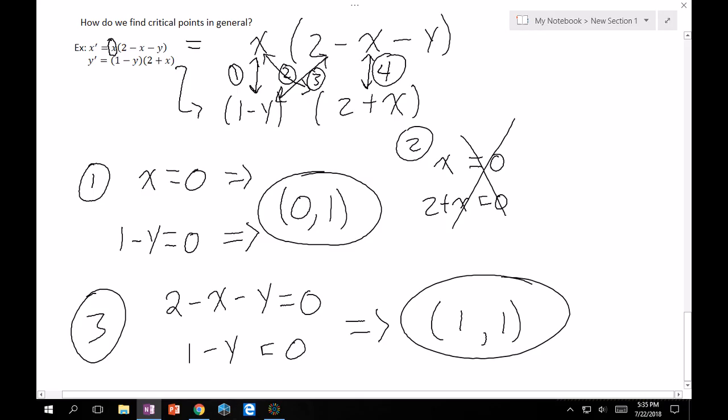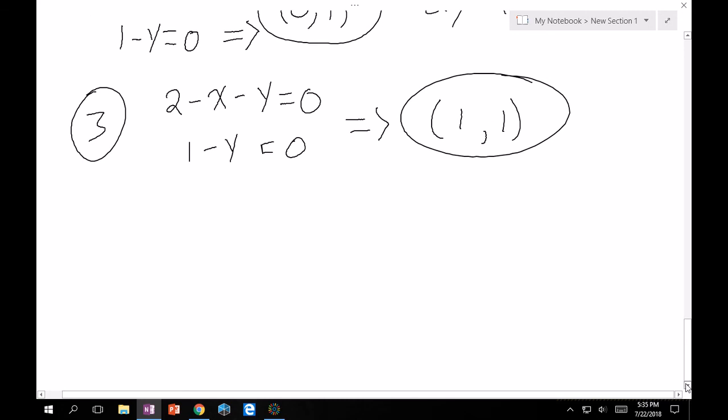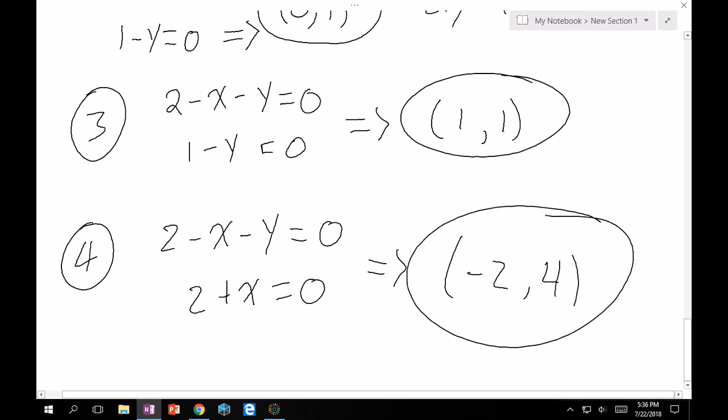My last one is case four: 2 minus x minus y equals zero, and then 2 plus x equals zero. Clearly from the bottom one, x has to equal minus two. If x equals minus two, then 2 minus minus two is going to give you four, which means y has to equal four. There we go, you found the three possible critical points for the system.